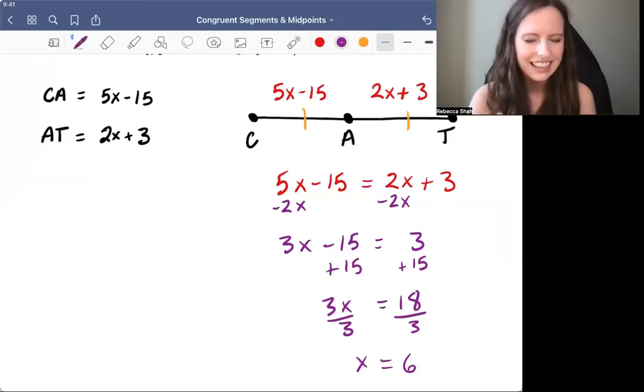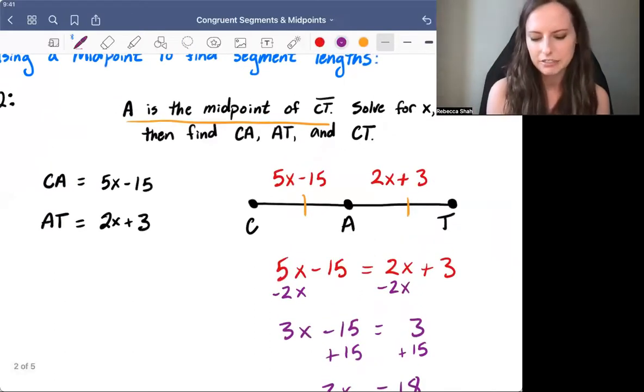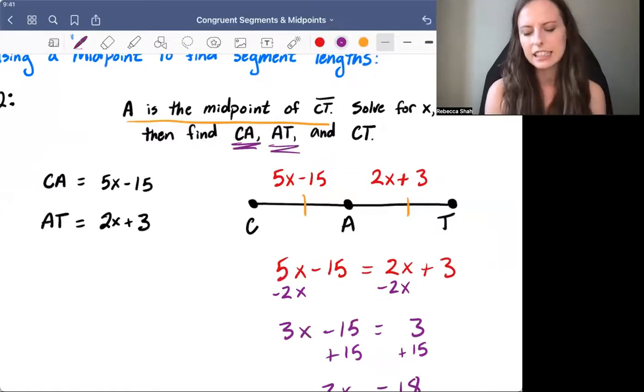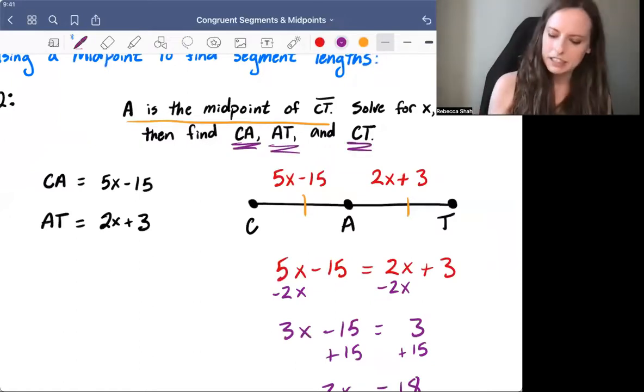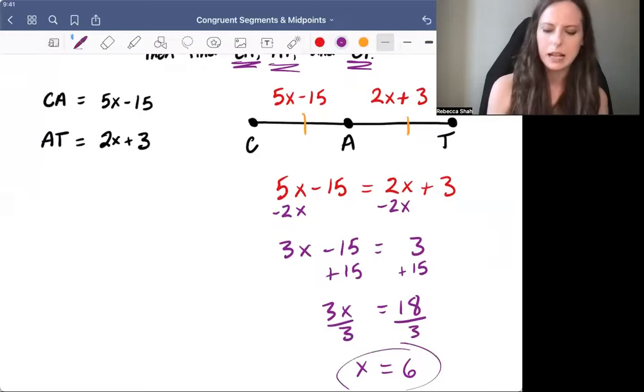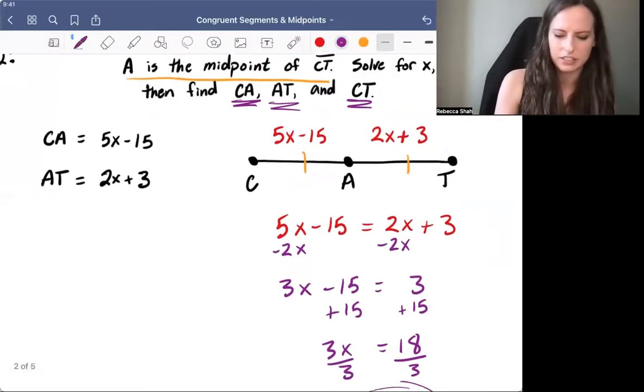Now be careful. X is 6, but that's not our final answer. Remember, it was asking us to find CA, AT, and CT.